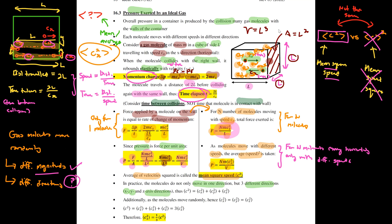Because molecules move in the x, y, and z directions, you can write: c² = cx² + cy² + cz². Taking averages: ⟨c²⟩ = ⟨cx²⟩ + ⟨cy²⟩ + ⟨cz²⟩. You can think of ⟨c²⟩ as the resultant mean square speed — the sum of the mean square speeds in each of the three directions.